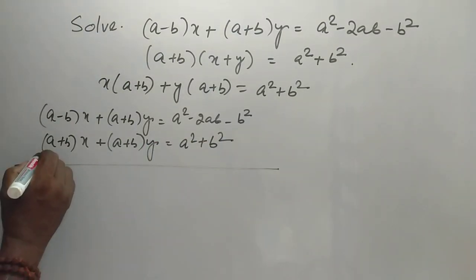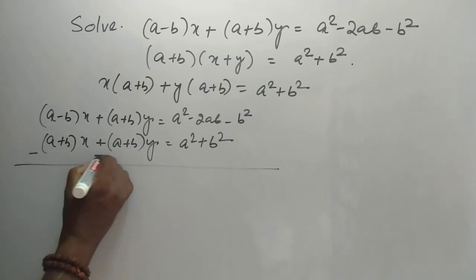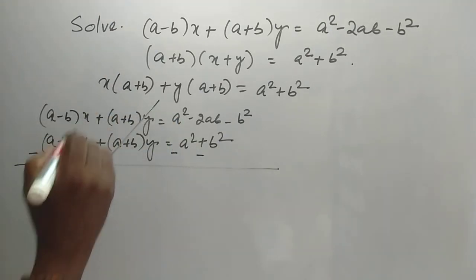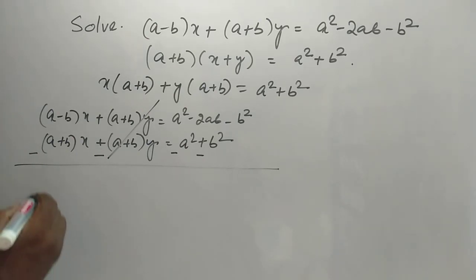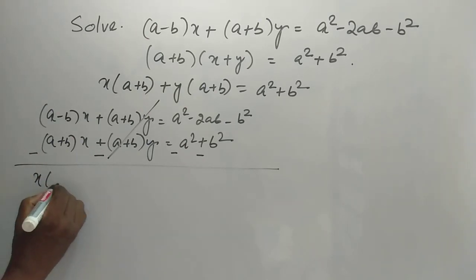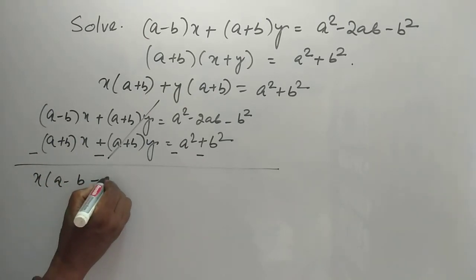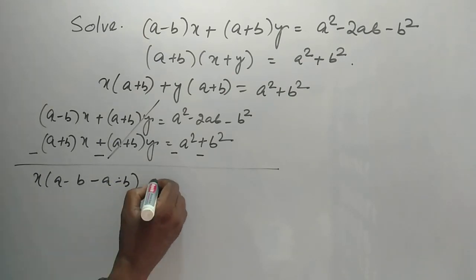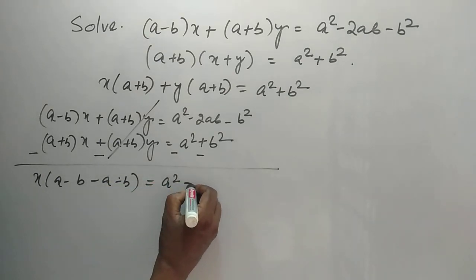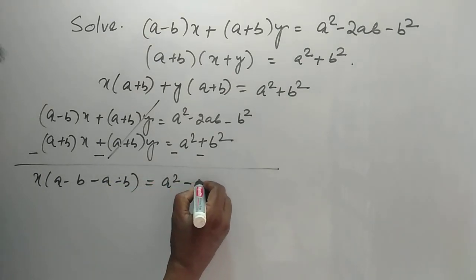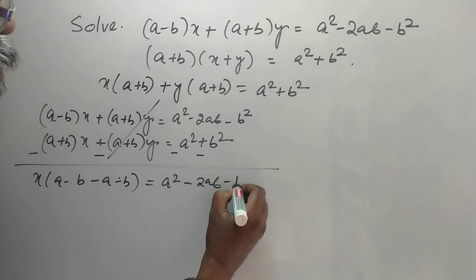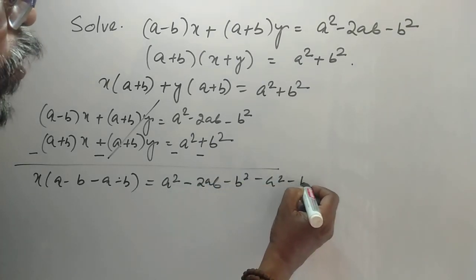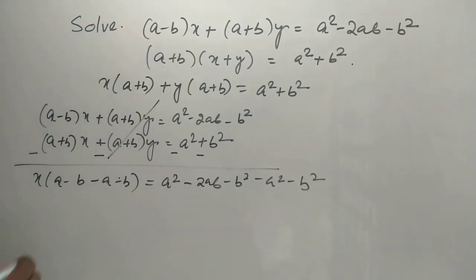Equating both equations and subtracting, the y terms are cancelled. With x: (a minus b) minus (a plus b) is equal to (a squared minus 2ab minus b squared) minus (a squared plus b squared).